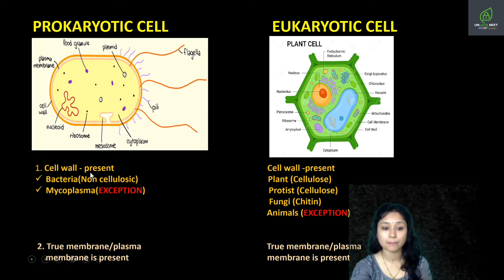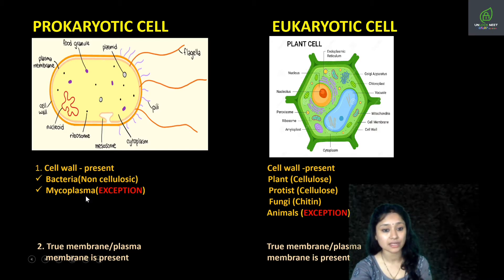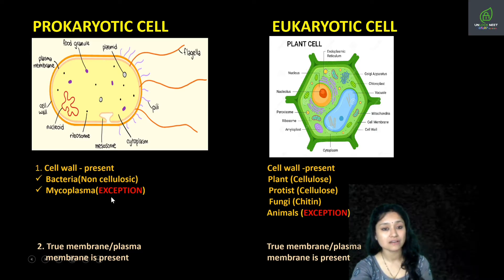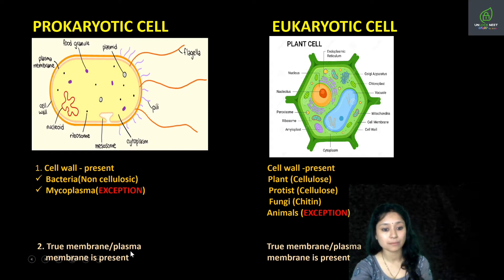Among prokaryotic cells, mycoplasma — the smallest known bacteria — are devoid of cell wall. So you have to remember that among prokaryotic cells, mycoplasma do not have a cell wall. While among eukaryotic cells, animals lack cell wall.